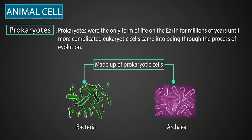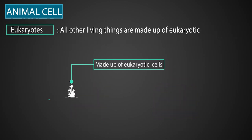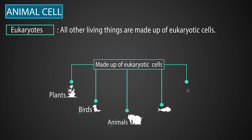Bacteria and archaea have prokaryotic cells, while all other living things — plants, birds, animals, fish, insects, rats, all types of plants — are made up of eukaryotic cells.